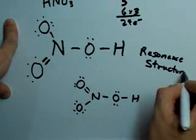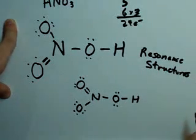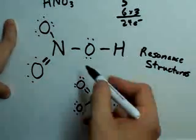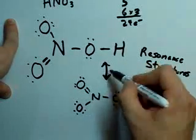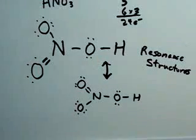Now, the way that we show that on a Lewis structure, if they ask you to show all resonance structures, is to draw out the two Lewis diagrams and simply draw a double-sided arrow in between them.